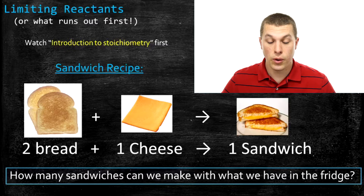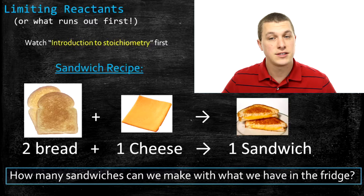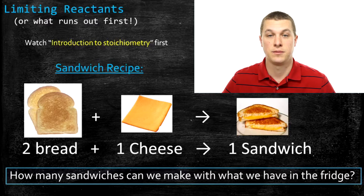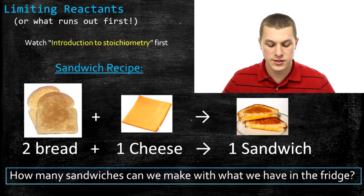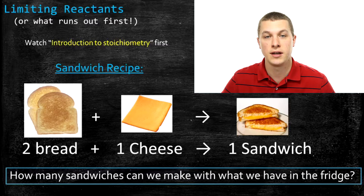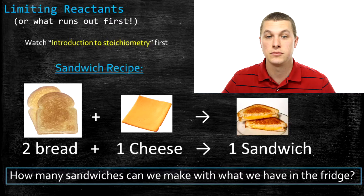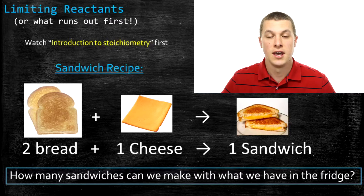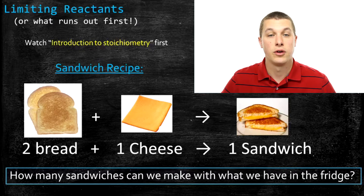In the case of the sandwich, our recipe is: two bread plus one cheese gives us one sandwich. To know how many sandwiches we can make, we have to look at how many slices of bread and cheese we have. Never confuse the recipe with your ingredients — the recipe is just what you'd read in the cookbook. What determines how much you can make is what you actually have on hand. It's the same with chemical reactions: they tell you the recipe, not how much you can make.